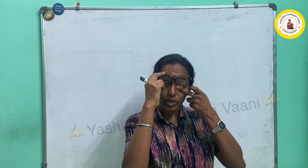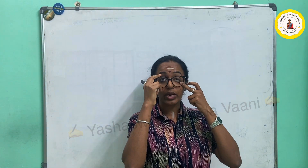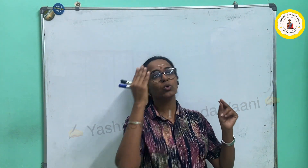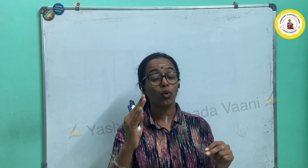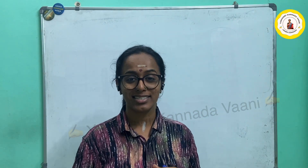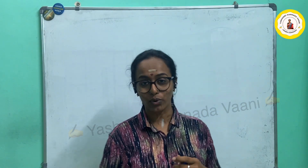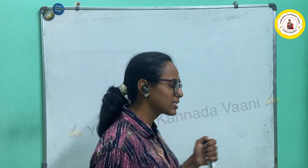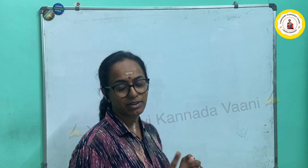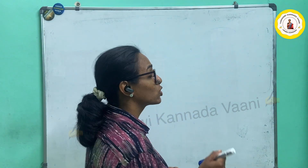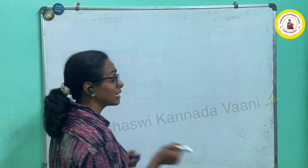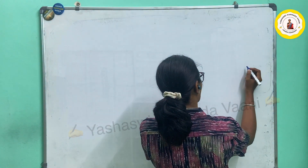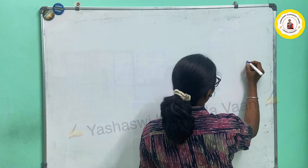In today's class we are going to learn 14 letters — the last 14 letters. Let's start. It's very simple. The last 5 letters are very simple. So remember letter number 3, or letter W.